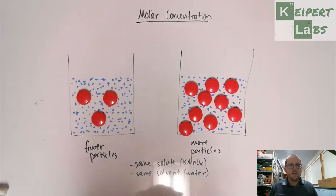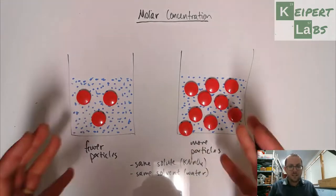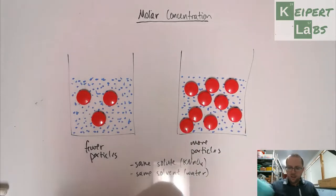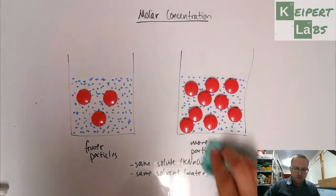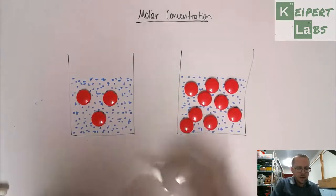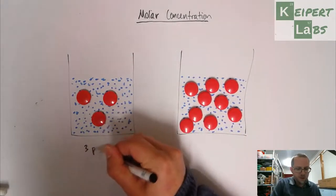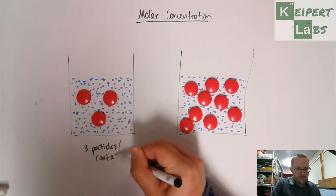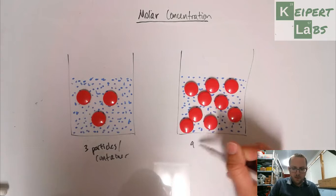So if we then look at these, and then say, well rather than just saying which one's got more or less, or fewer particles than the other, let's say that this one's got three particles per container, and this one's got nine particles per container.